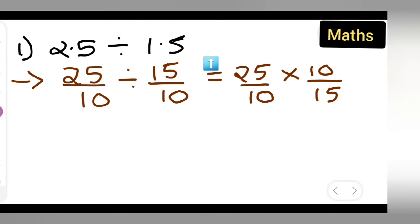So you have to write this as is, then multiply by the reciprocal which is 10 over 15. Here automatically 10 and 10 will cancel. 5 threes are 15, 5 fives are 25. So your answer will be 5 over 3.